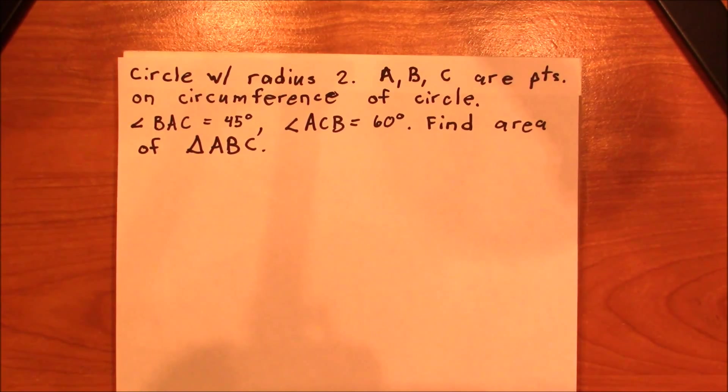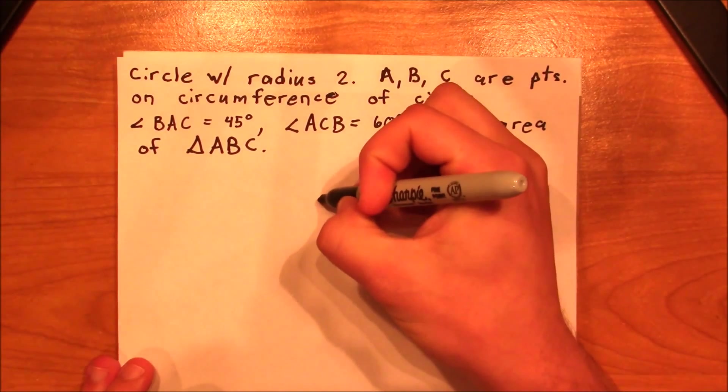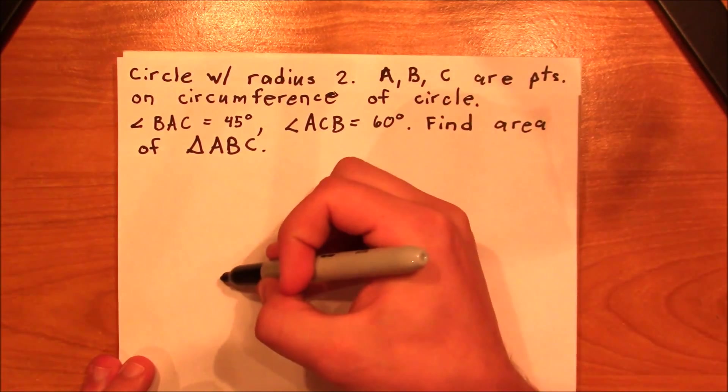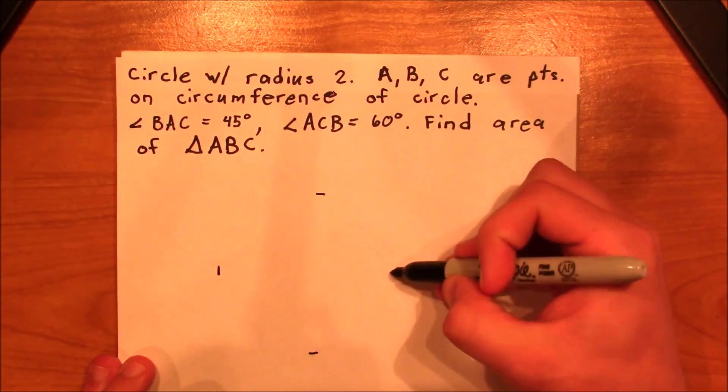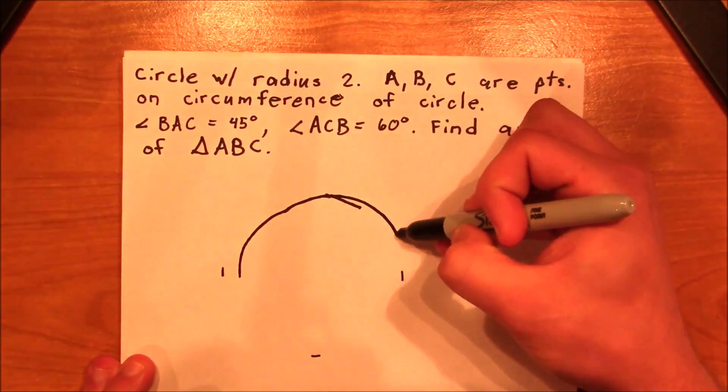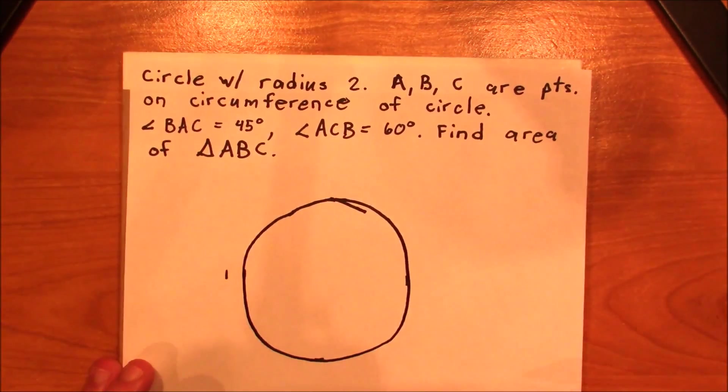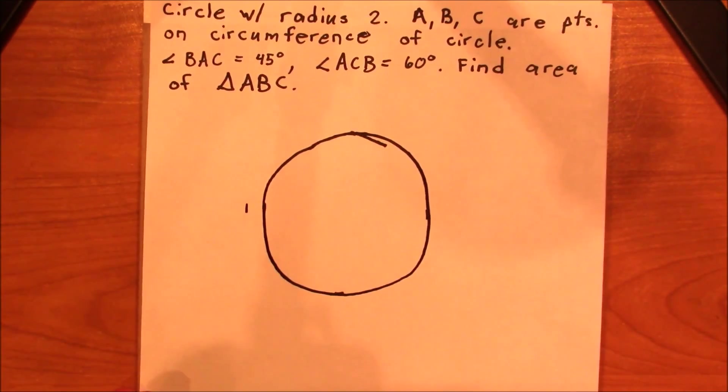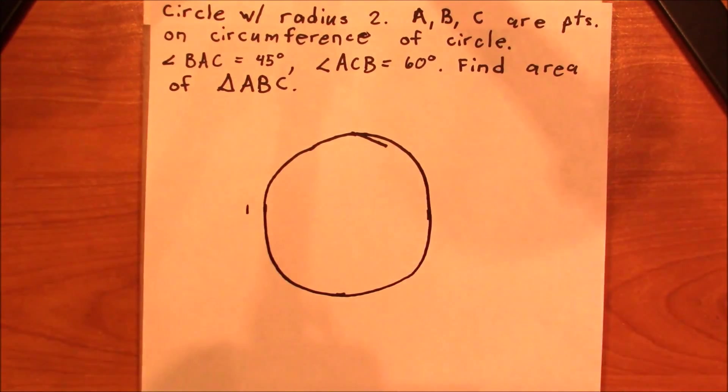So first of all, let me go ahead and draw a circle. Do my best to draw this nice and large. All right, so this is our circle, and we have points A, B, and C on it.